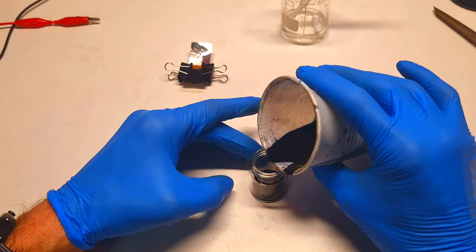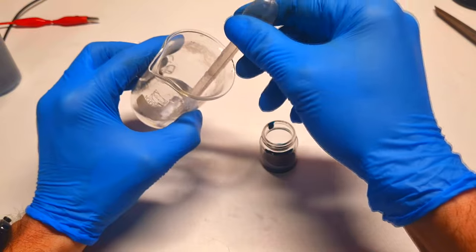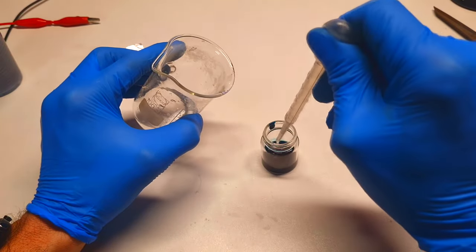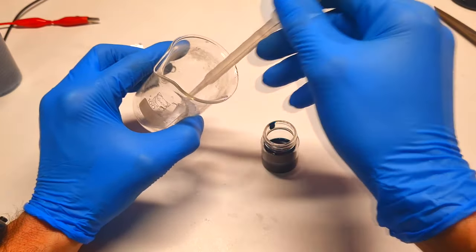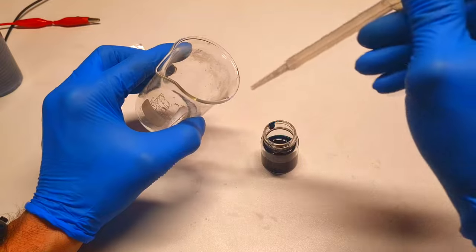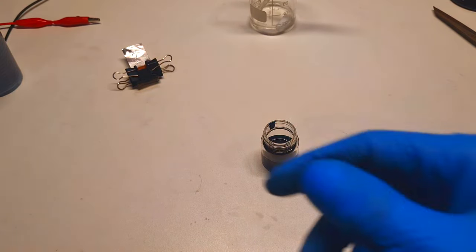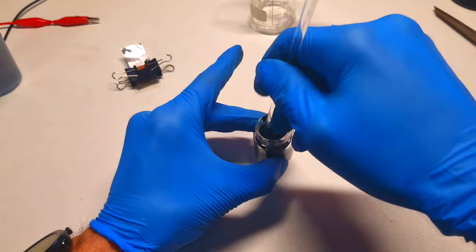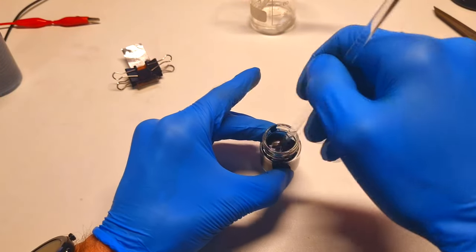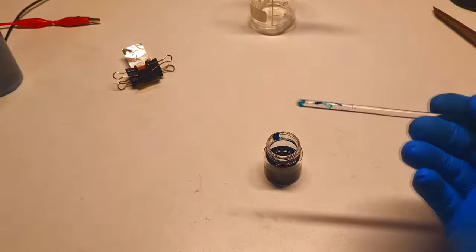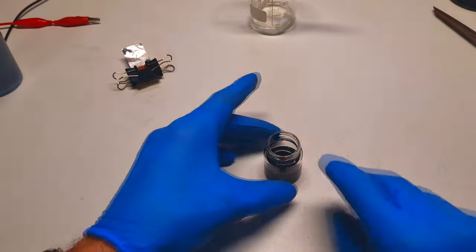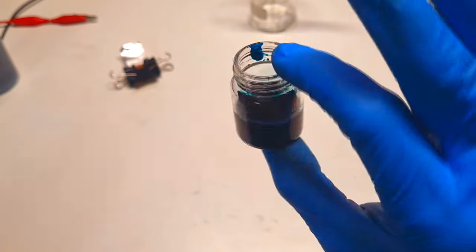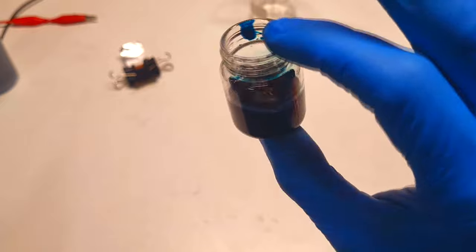Okay, this will be enough. And I will also add the electrolyte, which is potassium chloride. And here I have my mix of Prussian blue and potassium chloride.